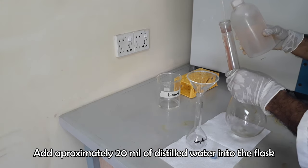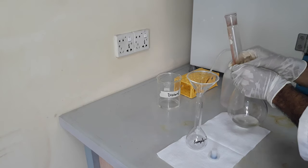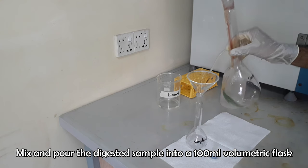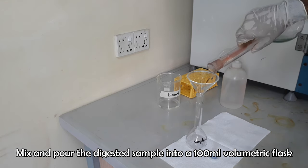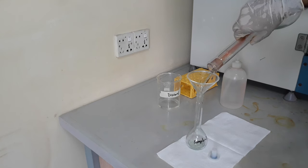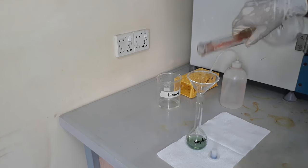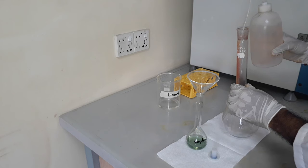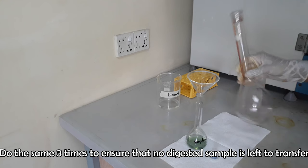Pour 15 to 20 ml of distilled water into the flask and shake to mix with digested juice. Now pour it into a 100 ml volumetric flask. Use funnel to avoid the loss. Do the same thing 3 times by washing the flask to make sure that no digestive residue is left in the digestion flask.